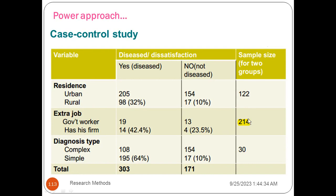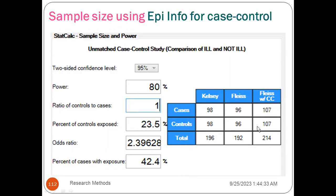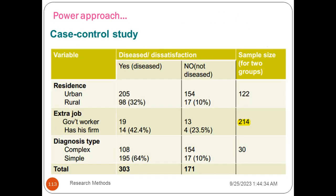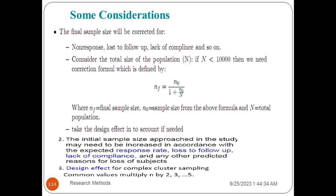This is software and the info. This is a case control. If you have a cross-section and a cohort, you can calculate this.